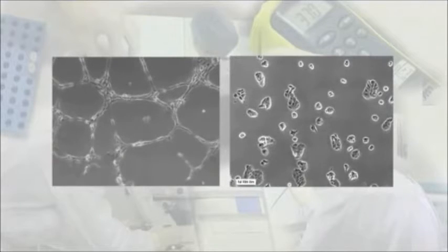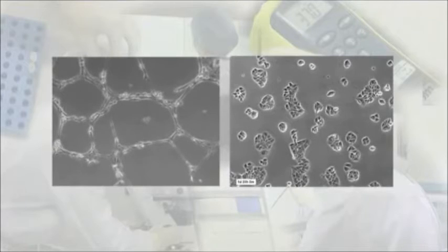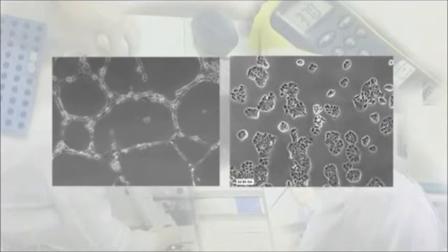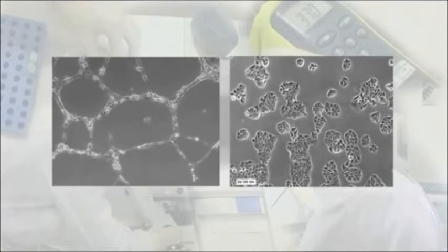Cell freezing and banking. Whilst in culture, cells are subjected to various selection pressures which can lead to instability and drift in the cells genotype and phenotype. Prolonged culture also puts the cells at risk from contamination. Continual cell culture should be avoided to ensure that cells are used in a validated passage window.